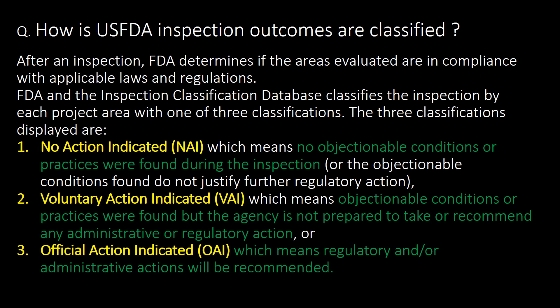How are USFDA inspection outcomes classified? After an inspection, the FDA determines if the areas evaluated are in compliance with applicable laws and regulations. Inspections are classified into three categories: NAI (No Action Indicated) — no objectionable conditions found; VAI (Voluntary Action Indicated) — objectionable conditions found but no administrative or regulatory action recommended; and OAI (Official Action Indicated) — regulatory or administrative action will be recommended.